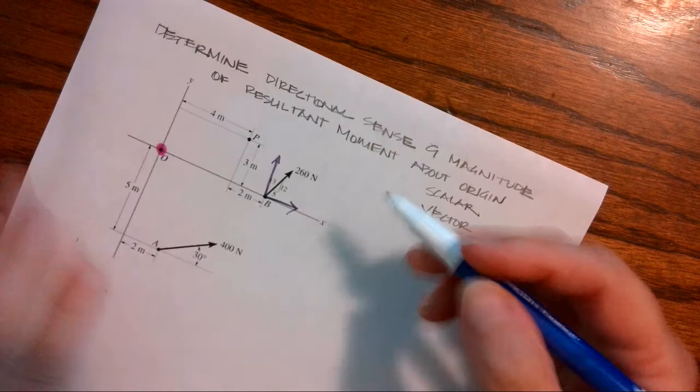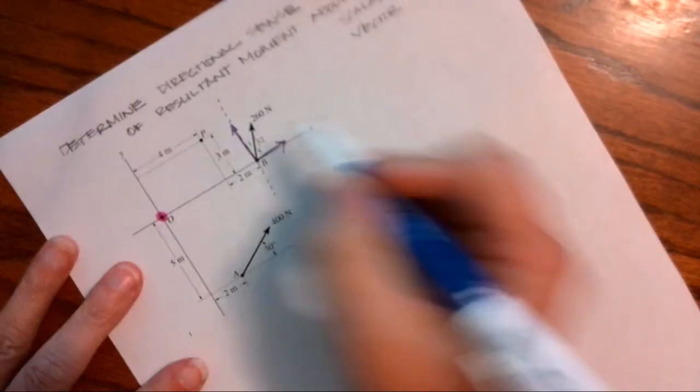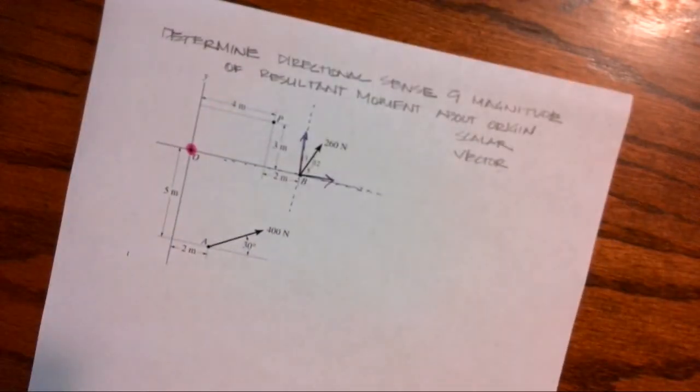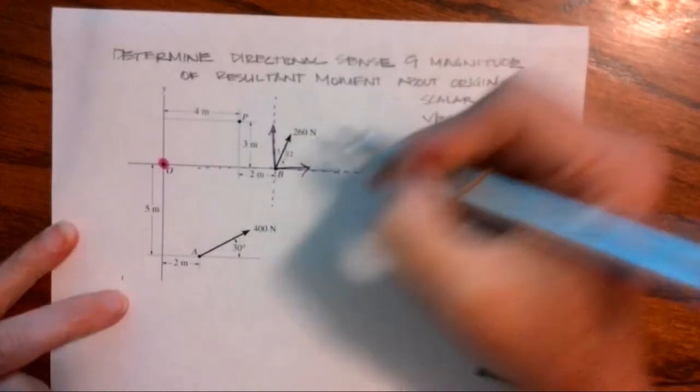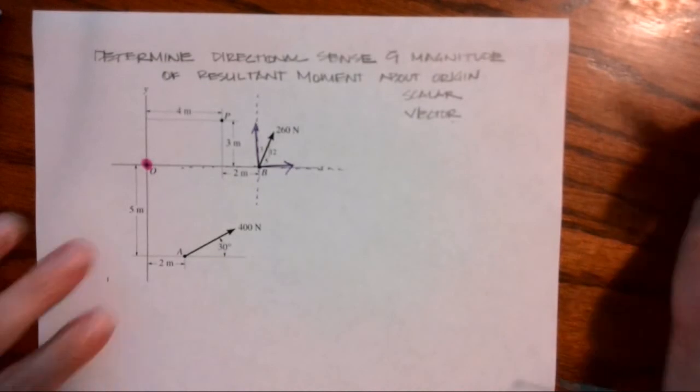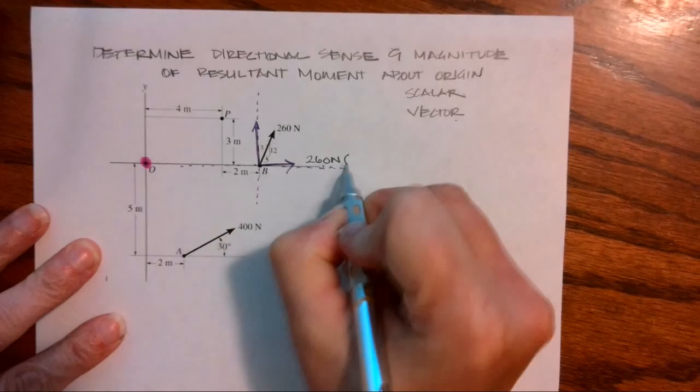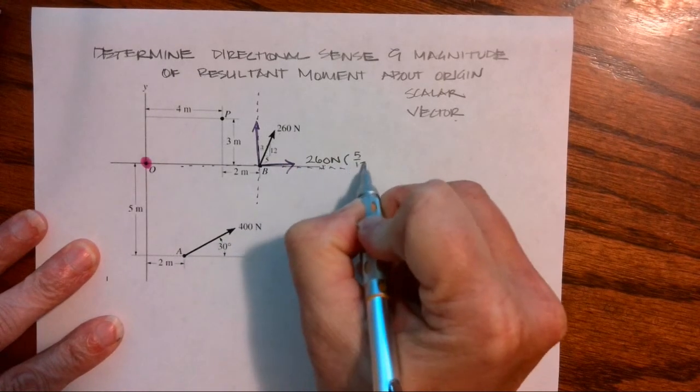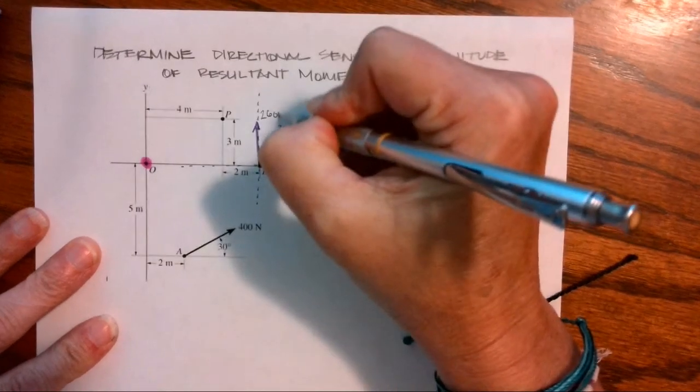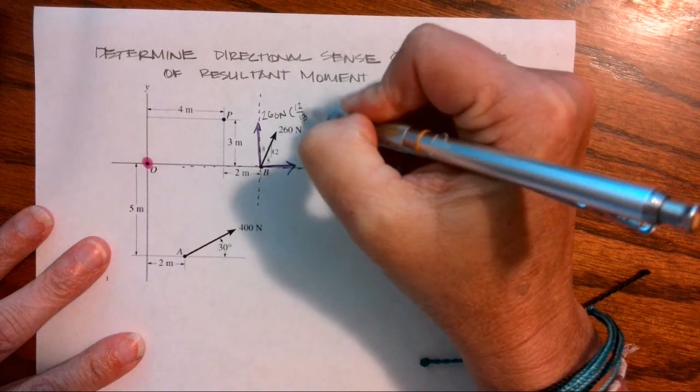And what I have to remember too is that these vectors actually just keep running along forever and forever. So if I have 260 Newtons and I have a 5-12-13 triangle representing my slope, then I know that I'm going to have 260 Newtons times 5 over 13, and I know that my Y component is 260 Newtons times 12 over 13.